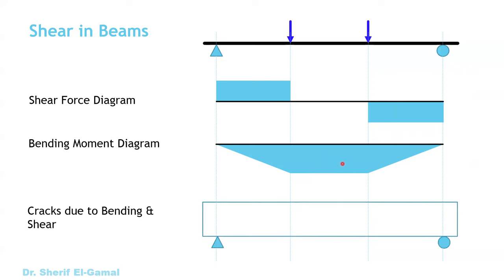If we take a small section at the middle part of the beam, you will see that at this middle section we have only bending moment and no shear forces at all. The bending moment here will result in tensile forces at the bottom of the beam. As you know, concrete is weak in tension. Therefore, if we have a crack, the crack will be perpendicular to the tension force, and therefore this will be a vertical crack.